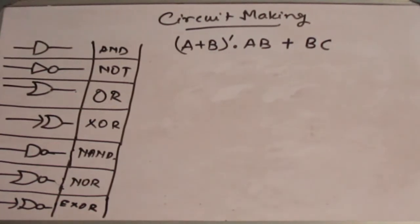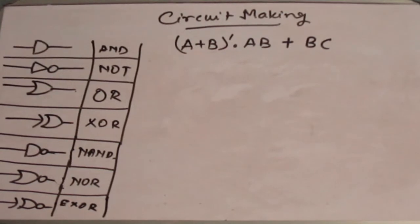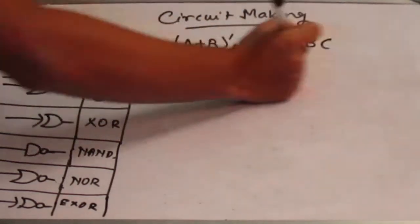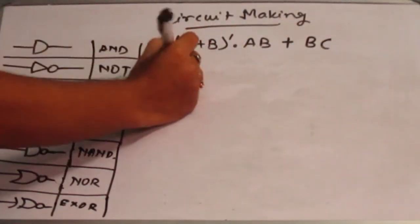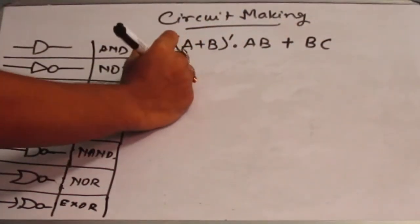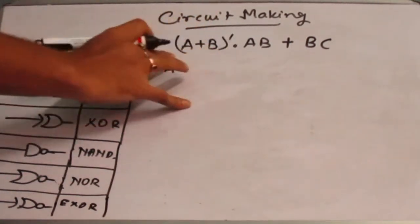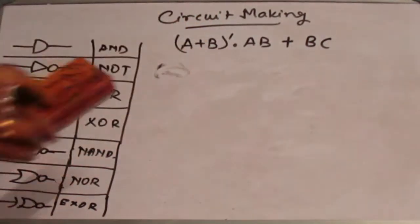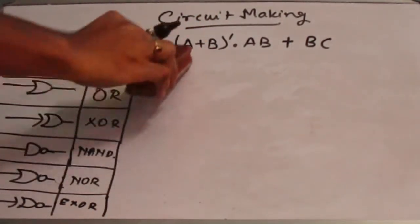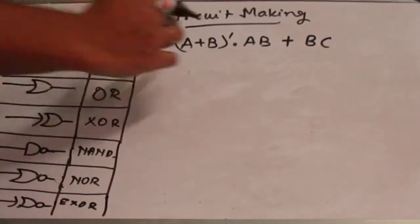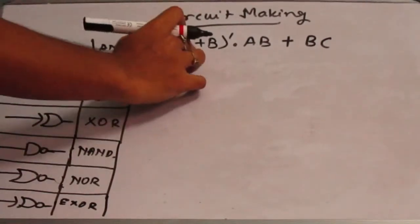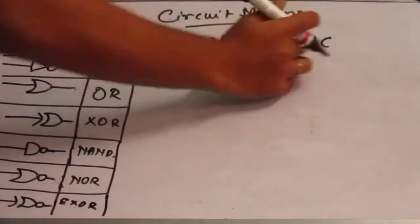And in the next lecture I will show you how to make it using the universal gate. So for the basic gate, for this expression, simply take A — first check how many inputs there are. There are three inputs: A, B, and C.